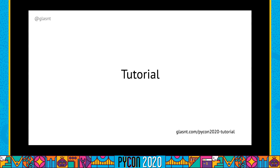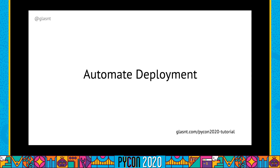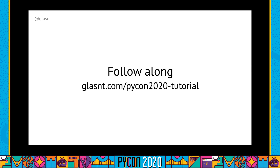You can follow along using the tutorial listed at glazen.com/pycon-2020-tutorial. We will run through the steps required to deploy our project manually, including explicitly creating all the backing services, secrets, and security requirements. Having completed our deployment manually, we will then automate that deployment using source-based deployments and Terraform.